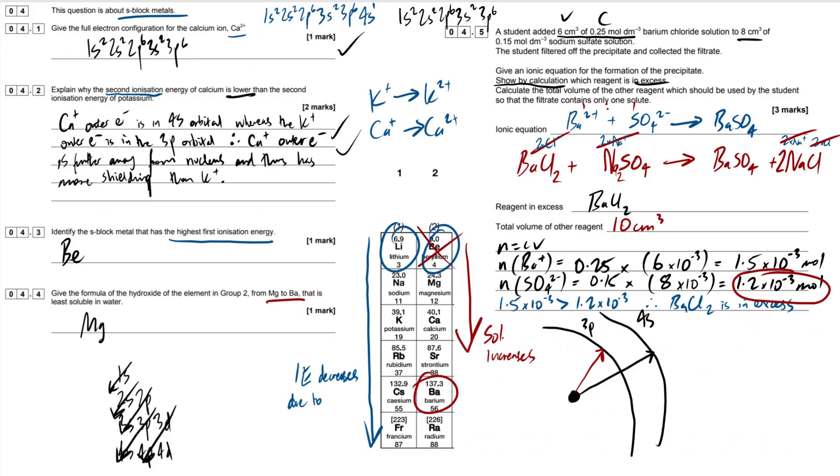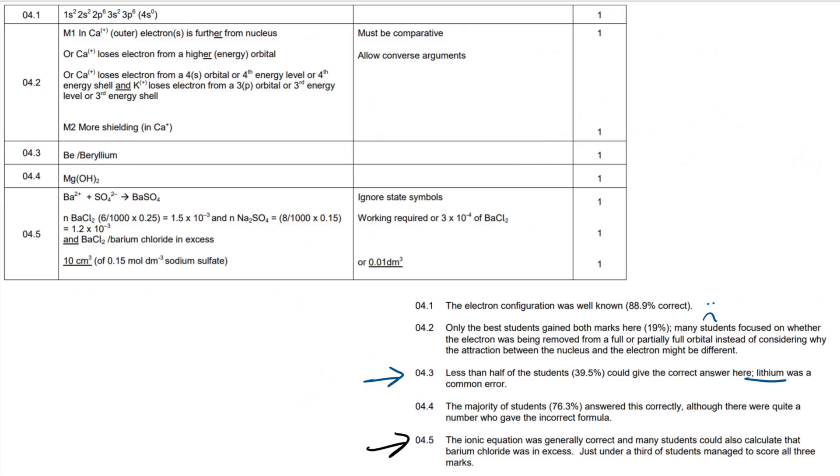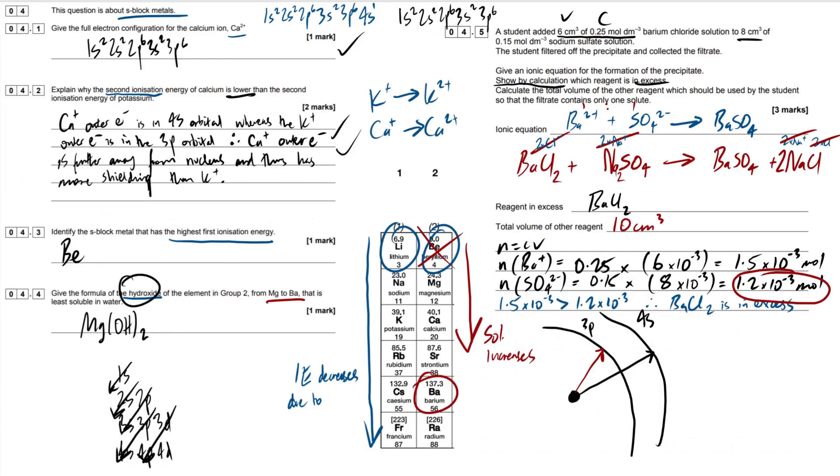Ah, what did it ask? Did I do it wrong? Give the formula of the hydroxide. Ah, shocking mate. So should have put that there. Yeah, my mistake. Moving on. Swiftly moving on. 4.5. The ionic equation was generally correct and many students could also calculate that barium chloride was in excess. Just under a third of students managed to score all three marks. So I don't know which marks they got wrong. Maybe it was the final one that people got a bit confused with. But yeah, it's group two. Not the most fun topic, as I said. But hopefully this video has helped you. Made an absolute shambles of this question. So yeah, make sure you read the question properly. Don't make my mistake. Best of luck, guys, in your exams. Peace.